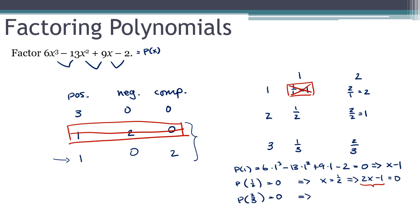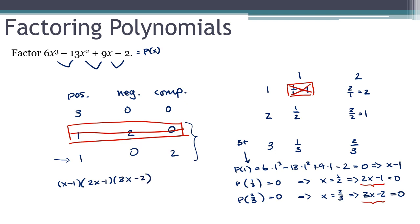P(one-half) equals 0 means x equals one-half, which is the same as 2x minus 1 equals 0, so 2x minus 1 is a factor. Similarly, P(two-thirds) equals 0 means x equals two-thirds, which is the same as 3x minus 2 equals 0, so 3x minus 2 is my third factor. Third-degree polynomial, three factors — we're done. Notice we did end up with three positive roots, just like Descartes' rule of signs said we should. So the factorization is (x minus 1)(2x minus 1)(3x minus 2). You can always multiply that out to verify you get back the original polynomial.